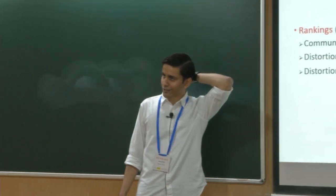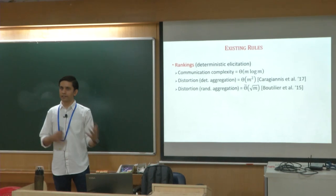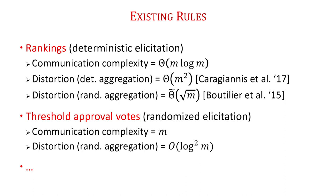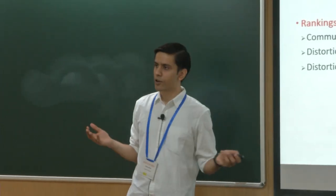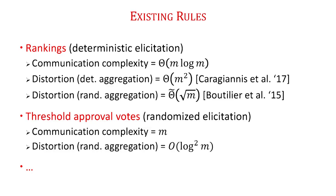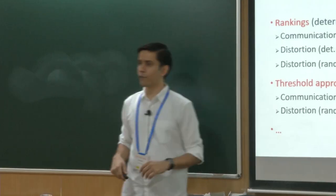For context, some known trade-offs: asking people to communicate rankings takes O(m log m) bits. With deterministic aggregation this gives Θ(m²) distortion; with randomized aggregation, roughly Θ(√m) distortion. Threshold approval votes use m bits and allow O(log² m) distortion with randomized aggregation. It turns out that when you optimize ballot design, you can Pareto-dominate all these known trade-offs — getting better communication complexity and better distortion than both rankings and threshold approval votes.